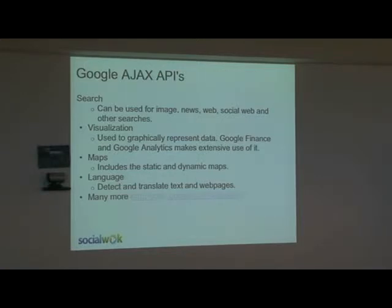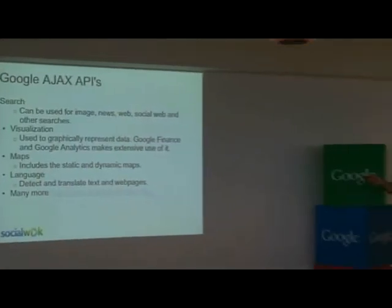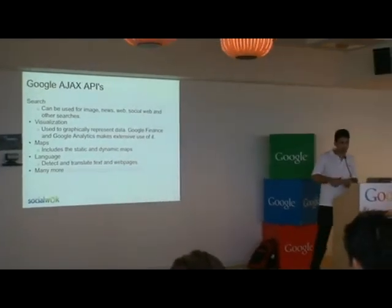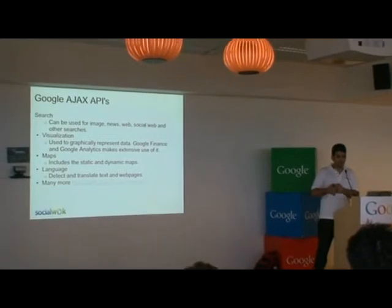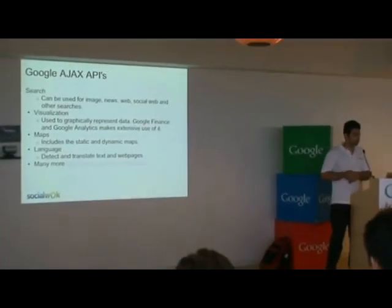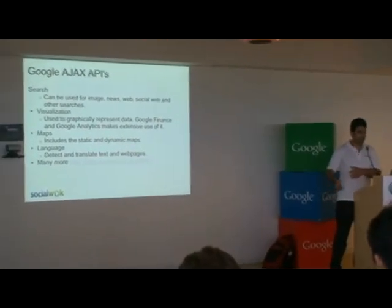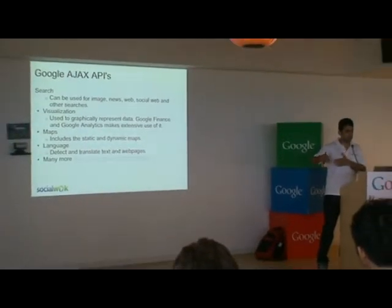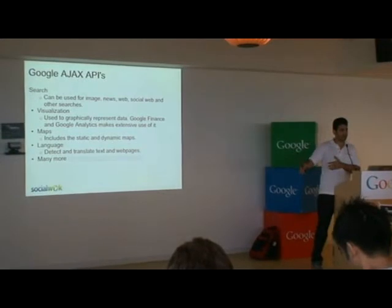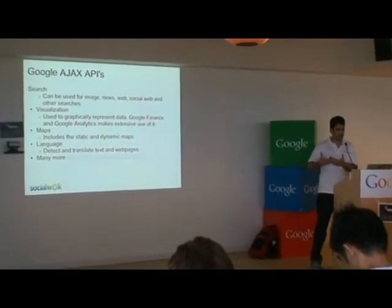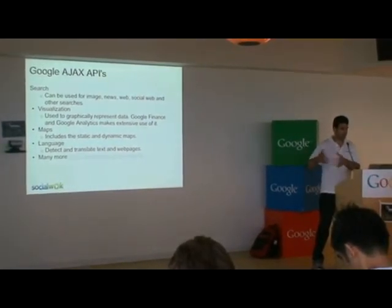The Ajax APIs contain a standard search API you can use for whatever, and they also have a really cool new API called the Social Web Search API. It actually searches through pages for social references — if you run it against a LinkedIn page, it would parse out everything and list all the friends on the page, who's talking, and what the other social references are. You can find the social metadata that's embedded in webpages.